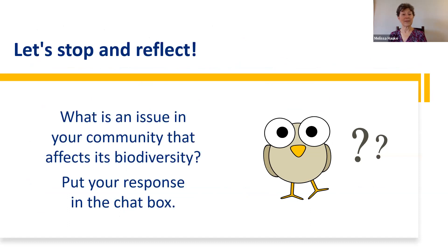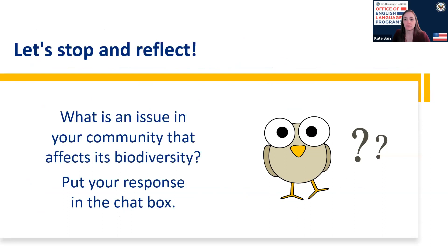Each pair could share and students could write their responses in the chat box for the online version. Let's stop and reflect: What is an issue in your community that affects its biodiversity? I live not too far from Melissa in Maryland, and we have the Chesapeake Bay close to the Atlantic Ocean. The damage done to the water there and the wetlands has definitely affected the biodiversity that can live there — from water pollution and overuse. How about you everybody? What are some issues in your community that affect biodiversity?